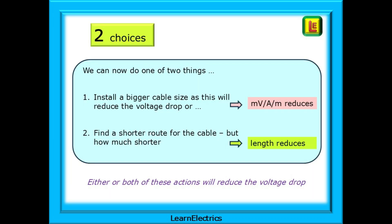We have two choices in order to find a solution. We can do one of two things. Either install a bigger cable size, as this will reduce the voltage drop, say from 4mm cable to 6mm. A bigger cable size will reduce the MVAM number. Or we could find a shorter route for the cable. But how much shorter? Can we calculate the new maximum length? If we reduce the length, we reduce the voltage drop. Either or both of these actions will reduce the voltage drop. We need to get below that magical 11.5 volts limit.